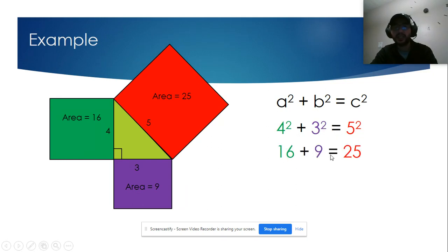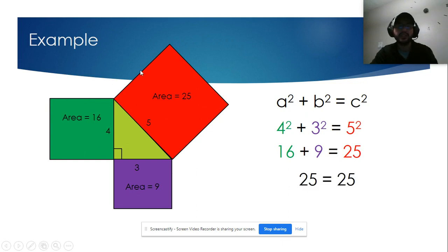The area of the square with side 5 is 5 squared, which is 25. So 4 squared plus 3 squared equals 5 squared: 16 plus 9 equals 25, and 25 equals 25. That proves this is a model for the Pythagorean theorem.